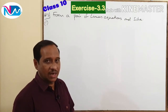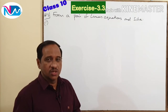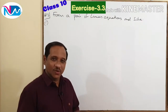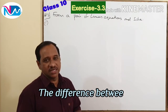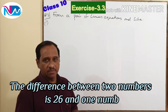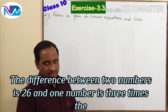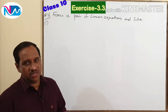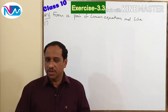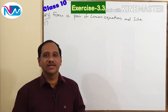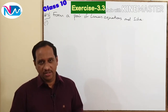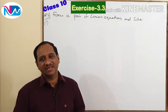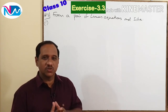There are a few questions under question number 3. The question is to form a pair of linear equations in two variables and solve. The question is: the difference between two numbers is 26 and one number is three times the other. Find the numbers. As I told you in the previous classes, whenever you get a word problem, you have to read and understand the question. In each question we will have to find two unknowns, and we will use the variables x and y to represent these two unknowns.